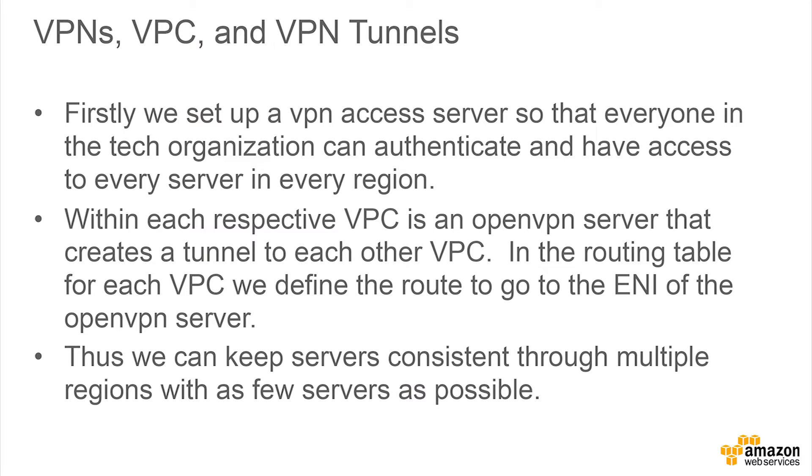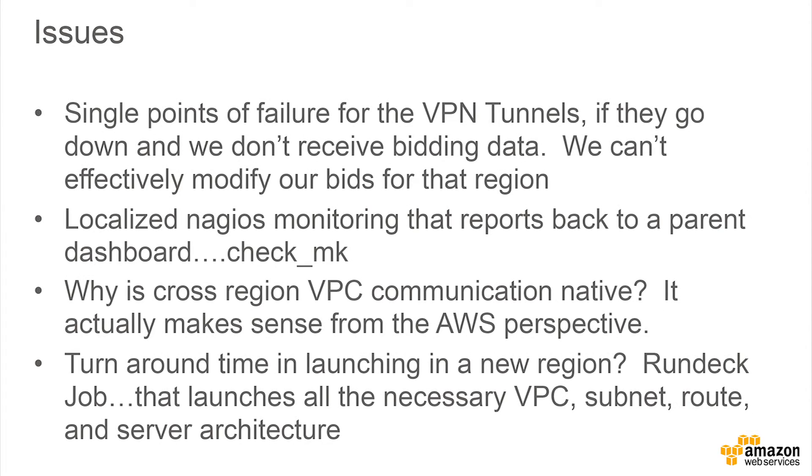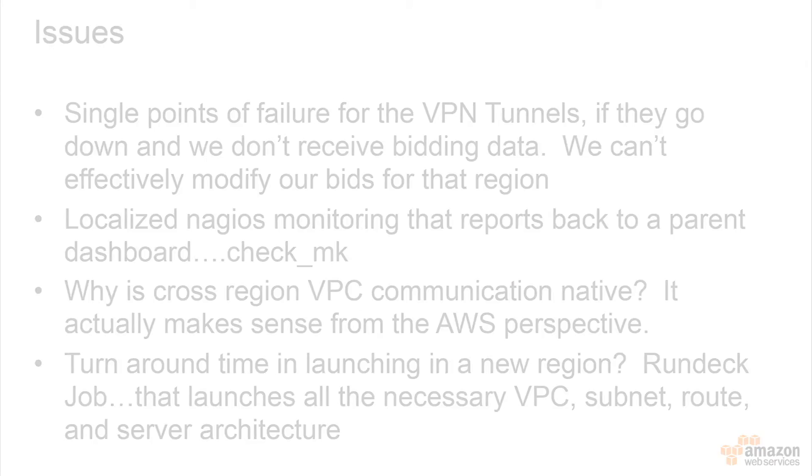One issue is that if the VPN tunnels went down, we wouldn't know what was happening in a specific region. So we set up Nagios monitoring to make sure the tunnels stayed up, and added redundancy so if one OpenVPN server fails, another picks up the traffic. This was fairly difficult because in routing tables you can't have multiple routes for the same network address. We also leverage Rundeck as our main tool for spinning up servers, subnets, and virtual private clouds when we expand into a new region.